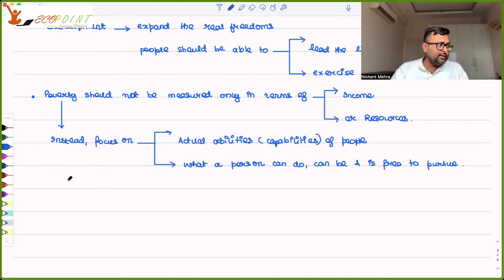Now, the other point is that there are some complex functionings also. Complex functioning could be you take part in a community, or for example, self-respect. These are also complex functionings. What person actually achieves - doings and beings both - those are functionings.